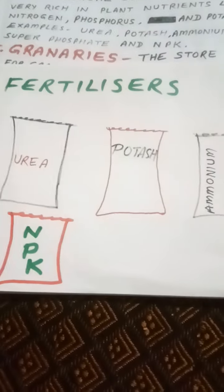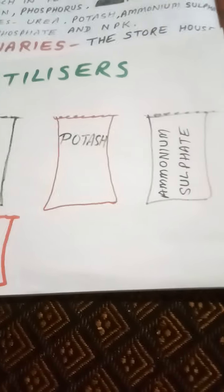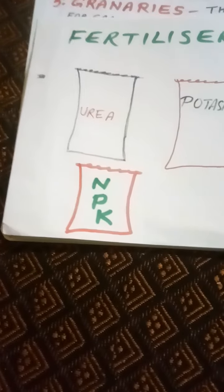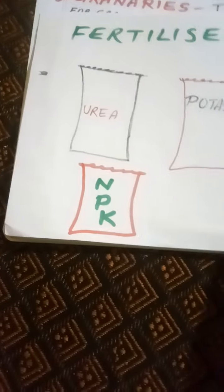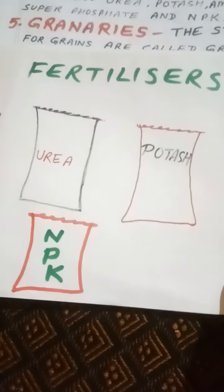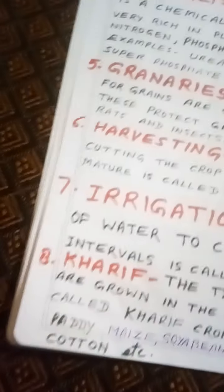Fertilizers include urea, potash, ammonium sulfate, and NPK. These are available at fertilizer shops and are chemical compounds used to enrich soil nutrients for crops.